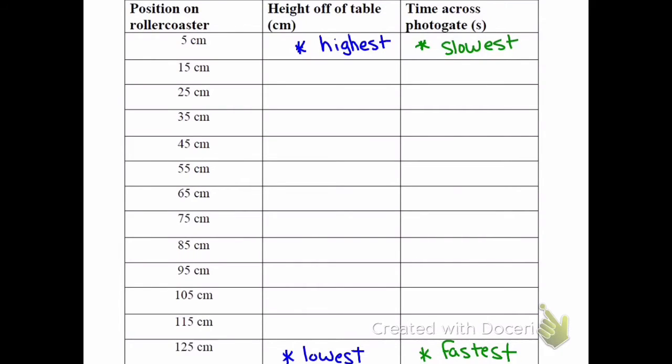And you measured the height off the table and what you found was that the highest height was this very first one and the lowest height was the very last one and everything else was in between. We also found that when you send the marble through the photo gates, the slowest time corresponded to the highest height and the fastest time corresponded to the lowest height.